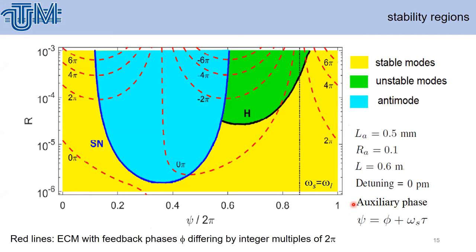Next we perform stability analysis, which is very important to know in which regime the laser is operating. This calculation was done using the program DDBF2, available at the Technical University. Yellow regions indicate stable modes, green indicates unstable modes — meaning periodical solutions, period doubling, or even chaos. We also have regions where anti-modes are present, meaning nothing visible on screen, only stable or unstable modes.